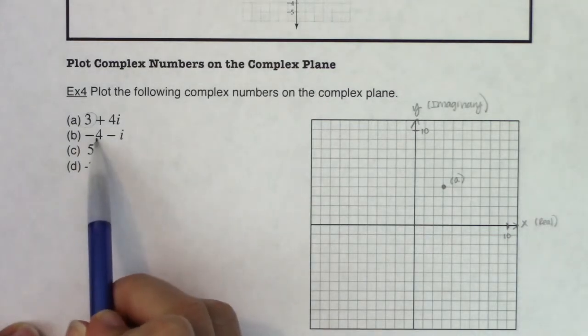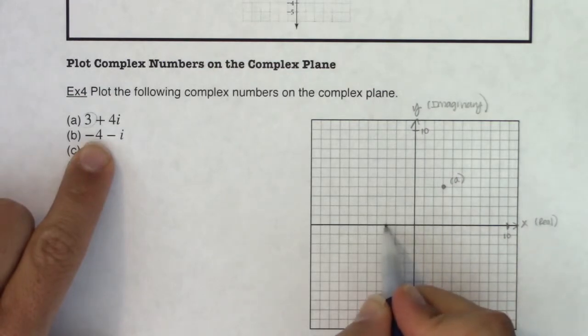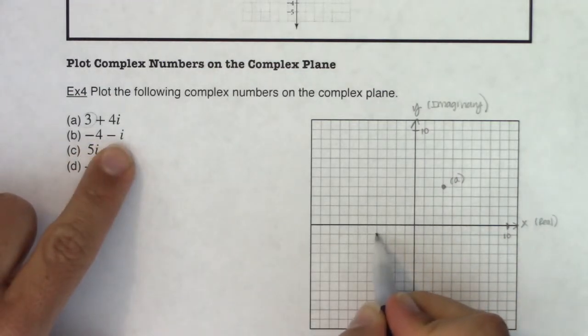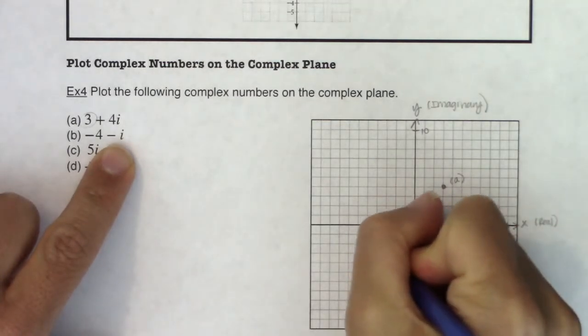Here we've got negative 4 minus i. So I'm going to move 4 units left on the real axis and 1 unit down on the imaginary axis. And this is point b.